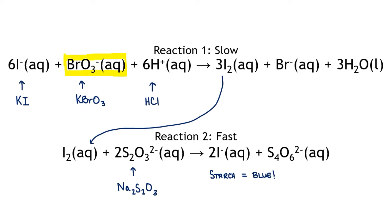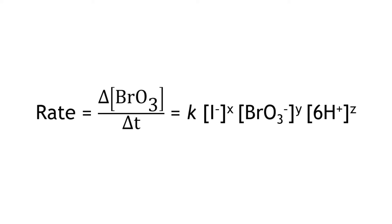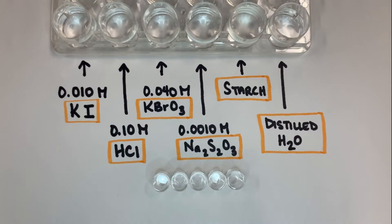If we know the rate of the reaction and we know the initial concentrations of all the reactants, we can write a rate law for this reaction and ultimately calculate the rate constant in this equation. This is what our reaction setup looks like. We have a 0.010 molar solution of potassium iodide, a 0.10 molar solution of hydrochloric acid, a 0.040 molar solution of potassium bromate, a 0.0010 molar solution of sodium thiosulfate, a 2% solution of starch, and distilled water. We will combine these ingredients in differing concentrations, and we will do five trials of each different series.